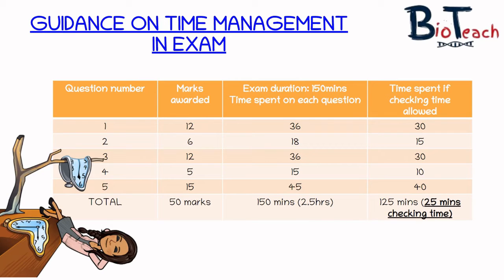My students often need guidance on how long to spend on each question, especially as some are worth only five marks and some are worth fifteen. It isn't enough to spread the time evenly across all questions — you'll have to write more for some. For question one, which is worth 12 marks, I recommend 30 to 36 minutes. For question two, worth six marks, spend anywhere from 15 to 18 minutes — 15 minutes if you want to allow checking time.